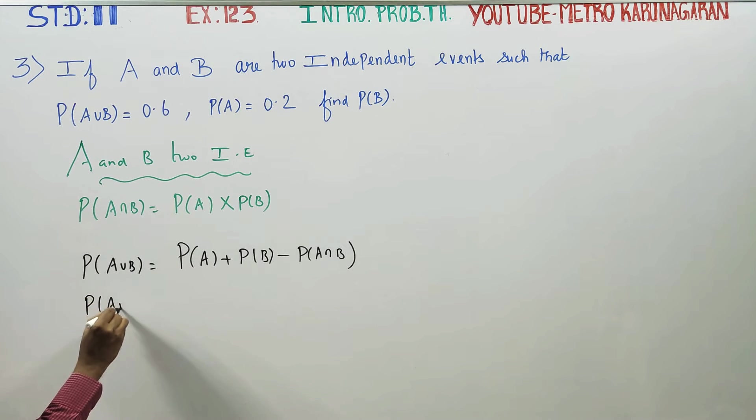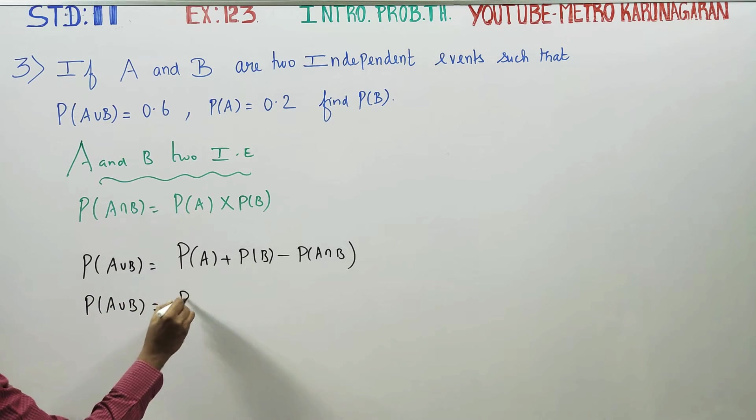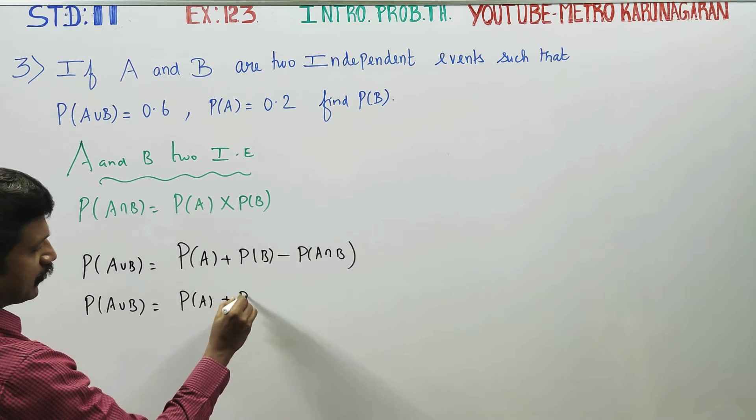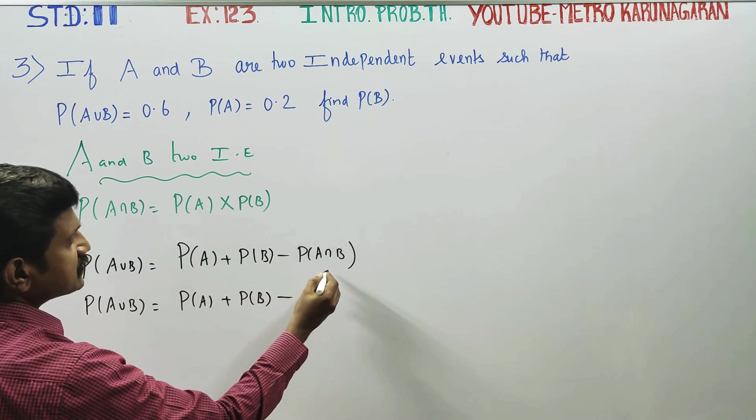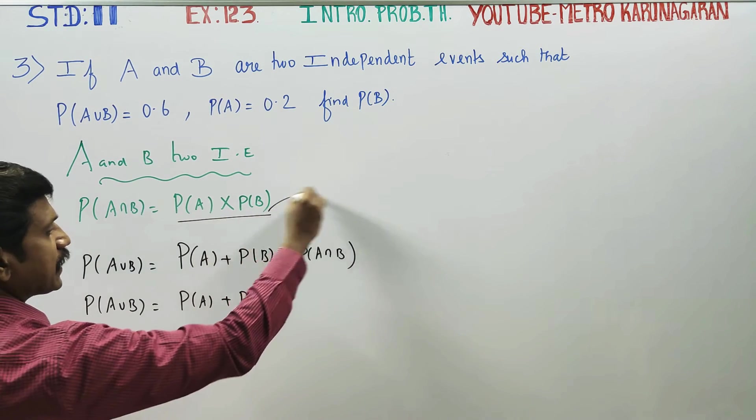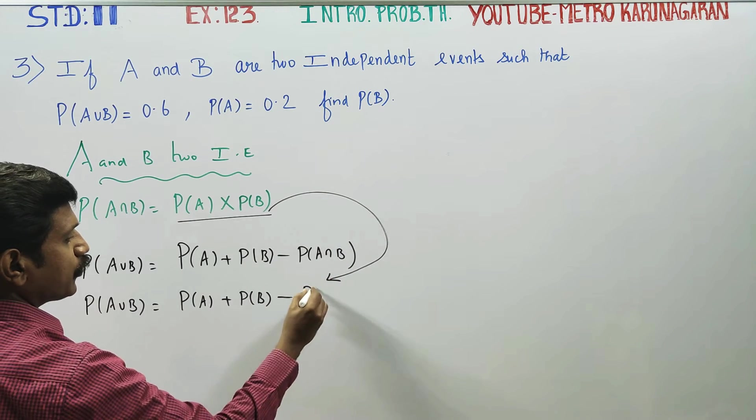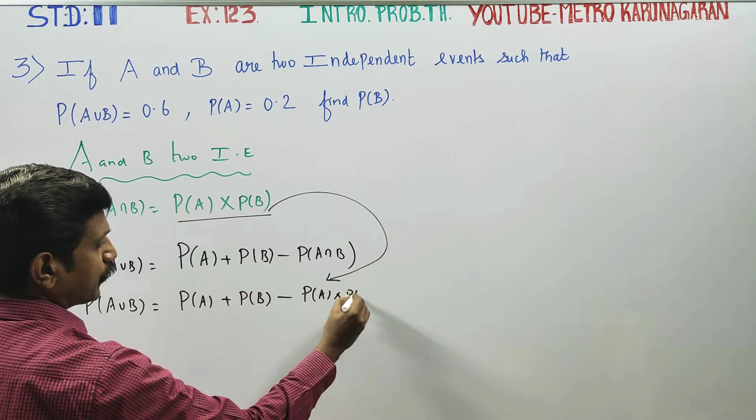Probability of A union B is equal to probability of A plus probability of B. For independent events, in the formula, minus probability of A into probability of B.